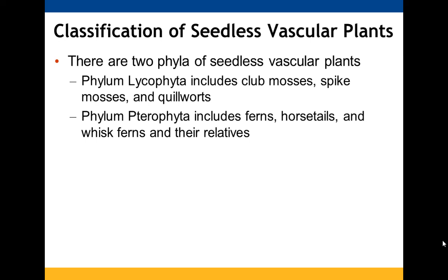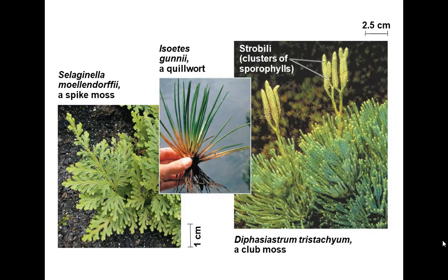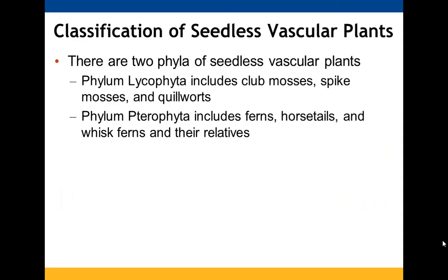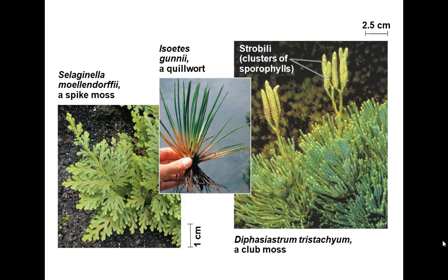The two phyla under the seedless vascular plants are Lycophyta and Pterophyta. Lycophyta includes your club mosses, and Pterophyta includes your ferns.